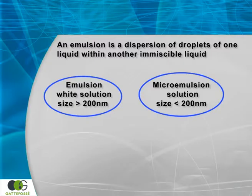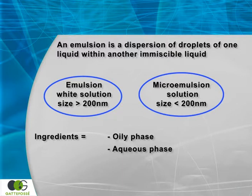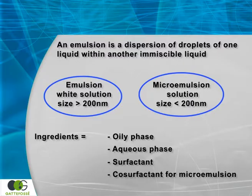The formulation of an emulsion, a microemulsion or a nanoemulsion, requires at least three to four different ingredients including an oily phase, an aqueous phase, a surfactant and a co-surfactant.